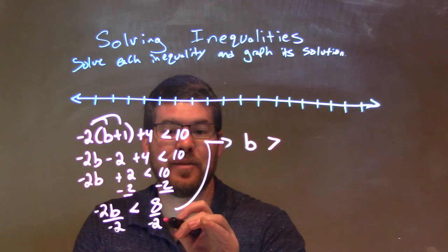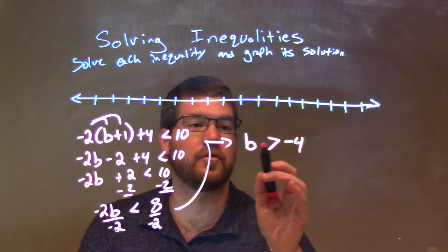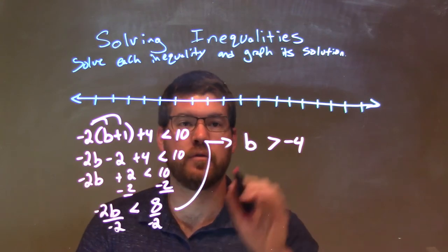Then from there, 8 divided by negative 2 is negative 4. So, our final answer here is just b is greater than negative 4.